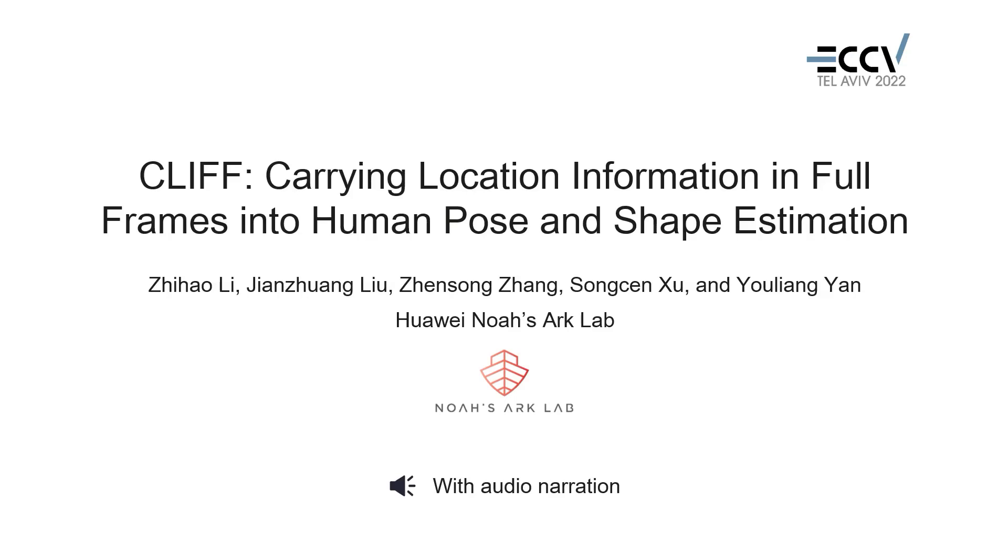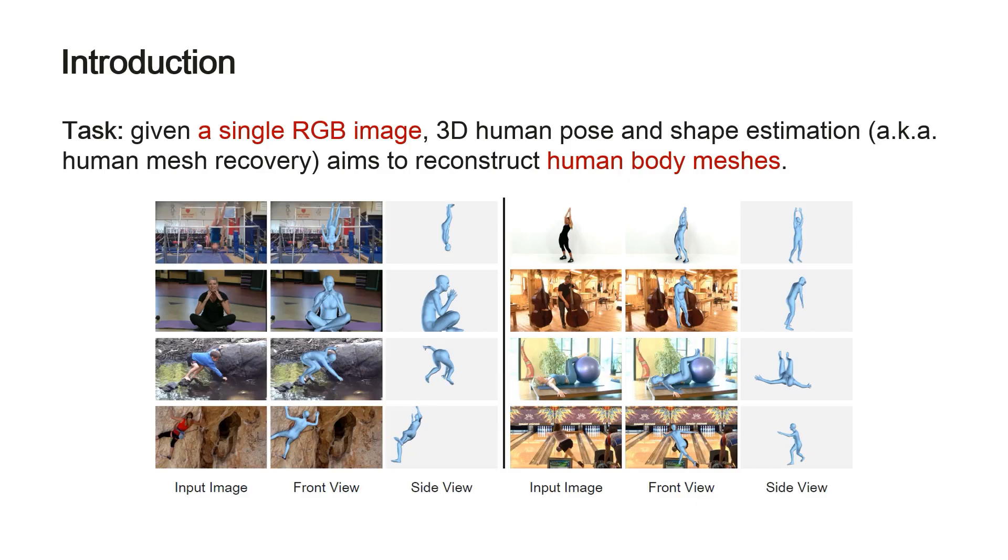We present CLIFF, carrying location information in full frames into human pose and shape estimation. Given a single RGB image, 3D human pose and shape estimation aims to reconstruct human body meshes.